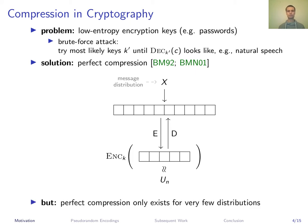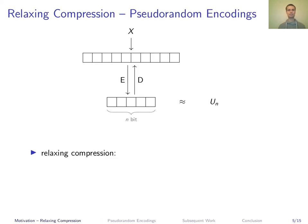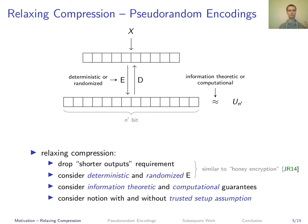However, perfect compression algorithms are only known for a very small number of distributions. We relax compression in several dimensions to include a broader class of distributions. We drop the requirement for shorter outputs and allow the encoding algorithm to be randomized — the first two basically correspond to honey encryption, an encryption notion resistant to brute force attacks. Further, we relax the indistinguishability requirement from information-theoretic to only computational indistinguishability, and we allow for a trusted setup, in our case a common reference string.